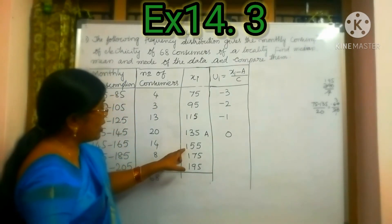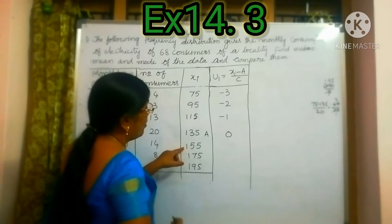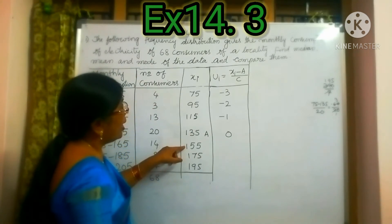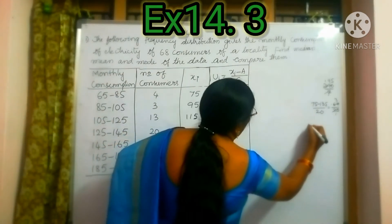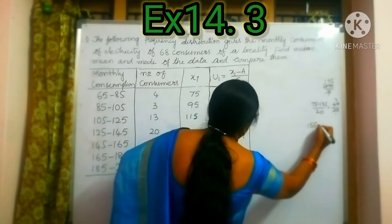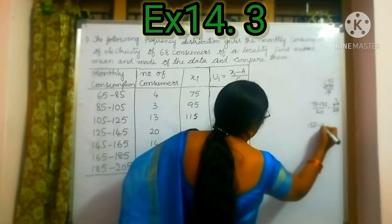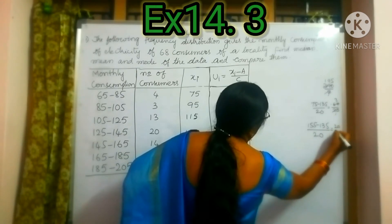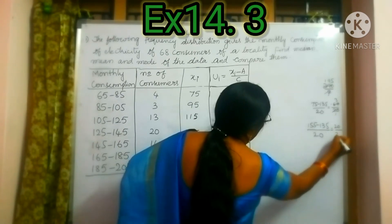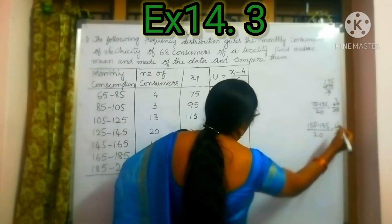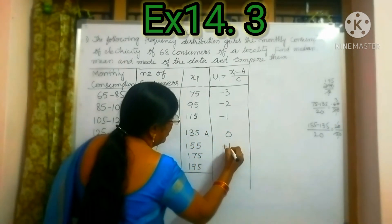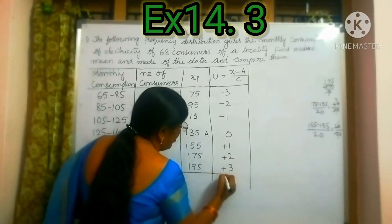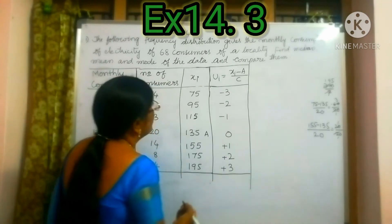Continuing: Xi = 155 gives (155 − 135) / 20 = 20/20 = 1. Then the next Ui value is 2, and the last is 3. So the complete Ui sequence is −3, −2, −1, 0, 1, 2, 3. If you do the problem yourself, you will get the same values.